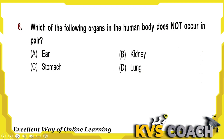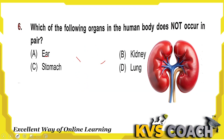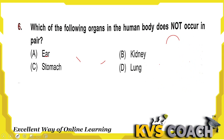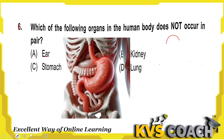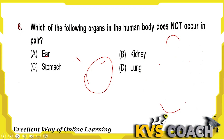Next: which organ in the human body does not occur in pairs? We have two ears — so ears are in a pair. We have two kidneys — so kidneys also occur in pairs. The stomach is a single organ, only one piece in our body. Lungs also occur in pairs. So the organ not in a pair is the stomach. Option C is the right answer.